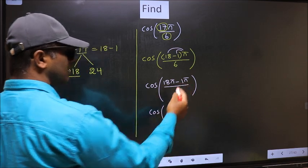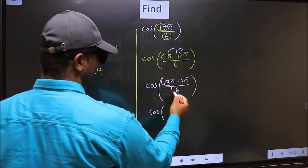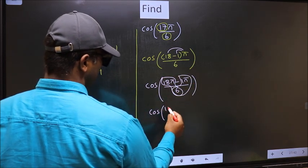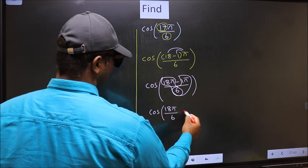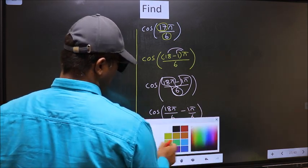Now cos. Here, you should split the denominator in this way. That is 18π/6 minus 1π/6. Next.